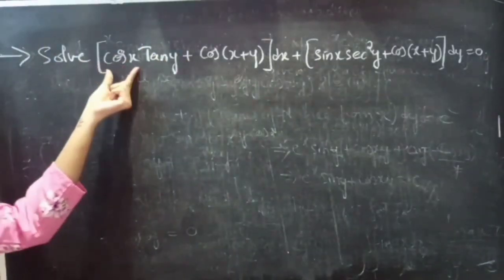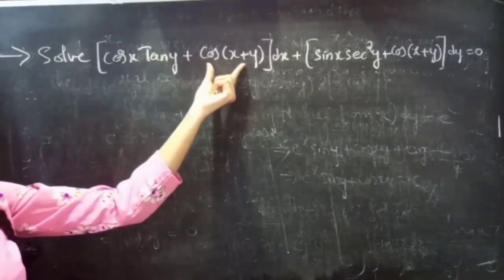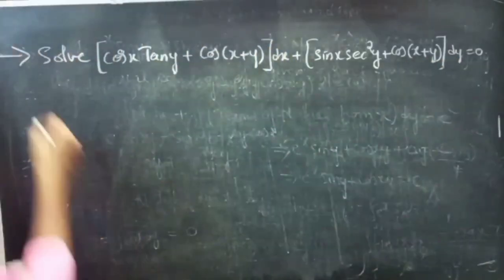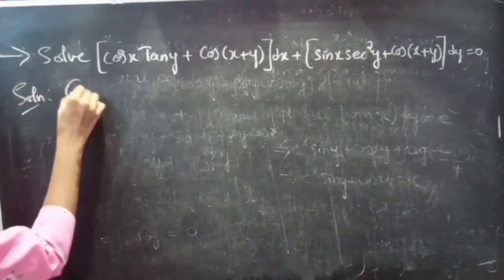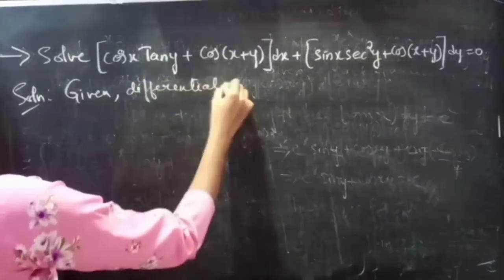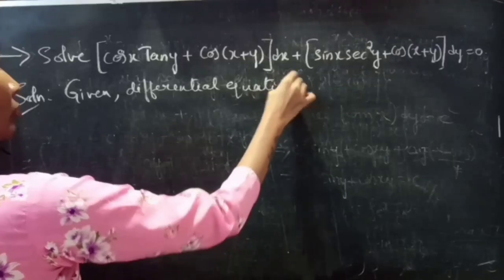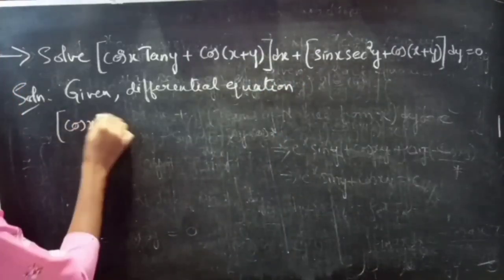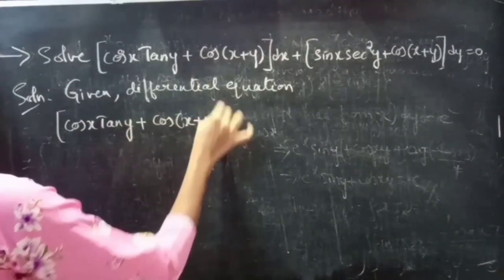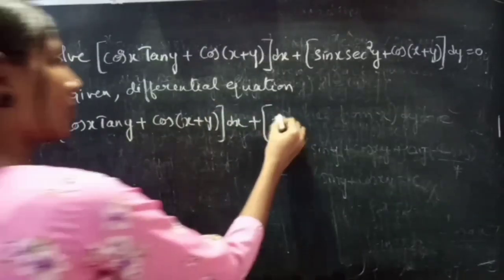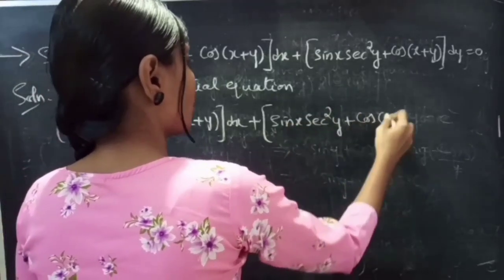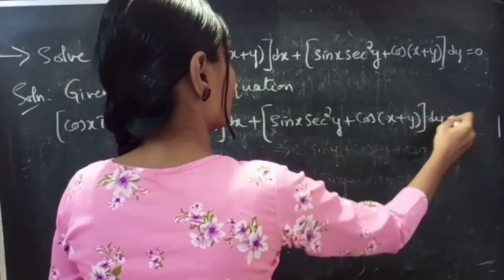Problem. Solve: cos x · tan y + cos(x+y) dx + sin x · secant² y + cos(x+y) dy = 0. Solution.